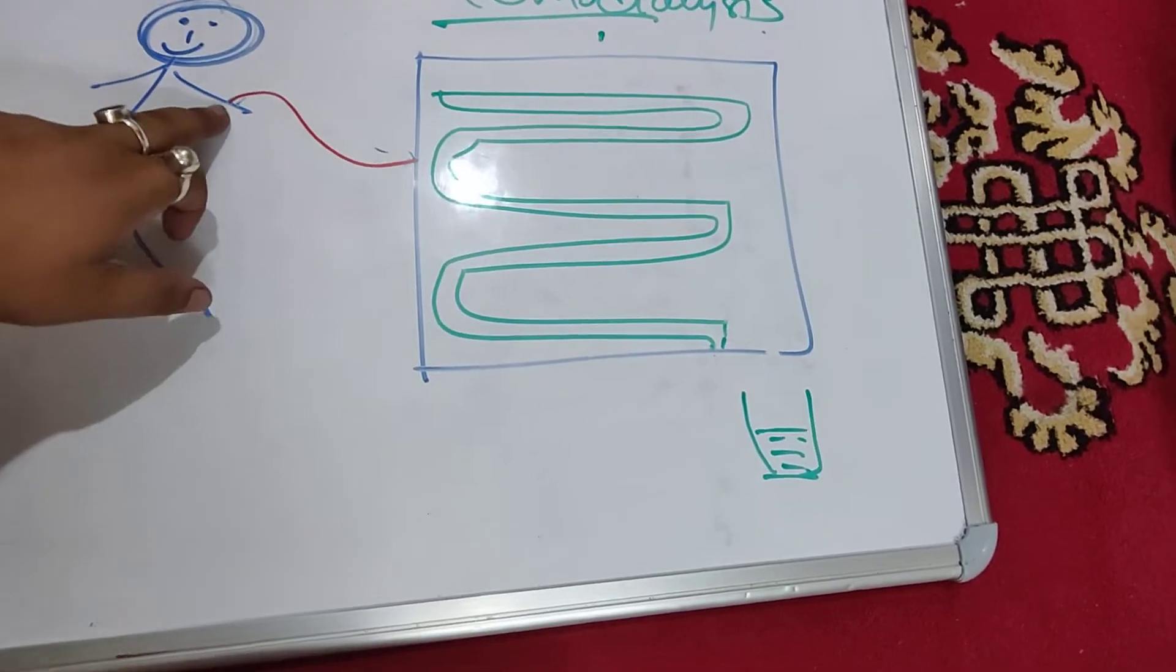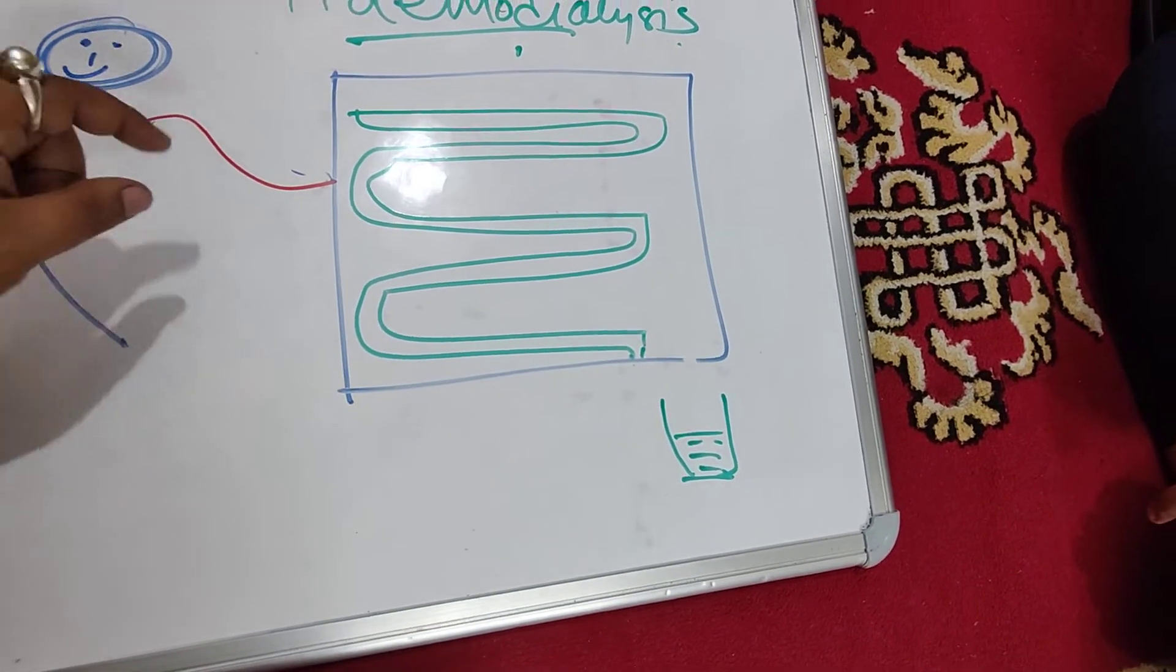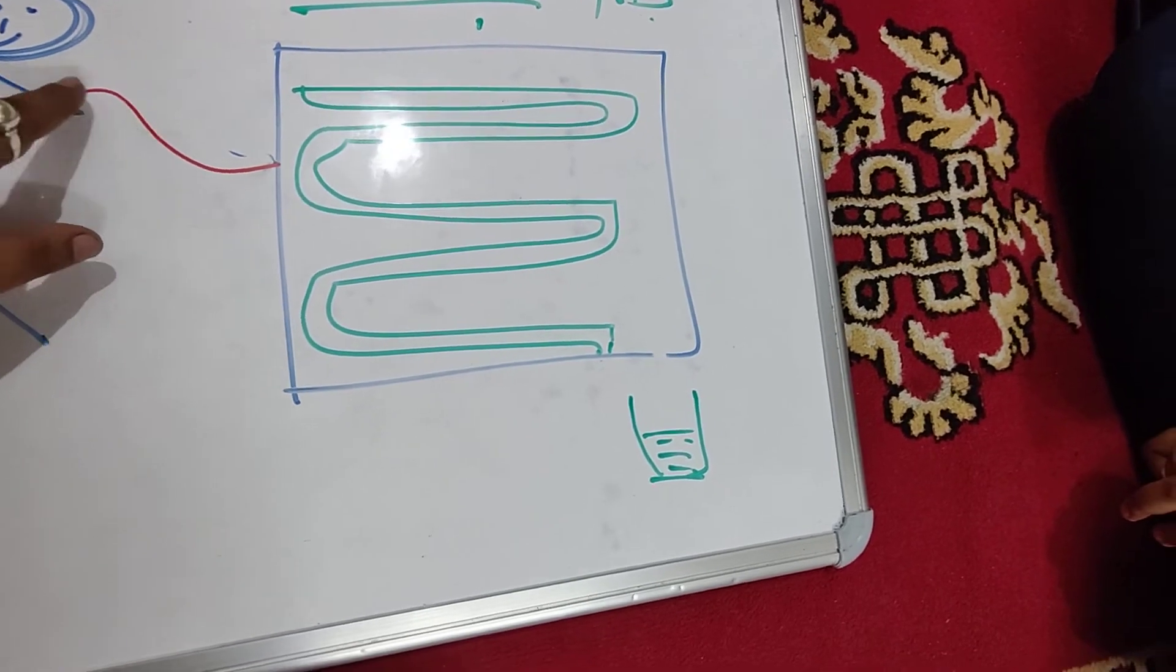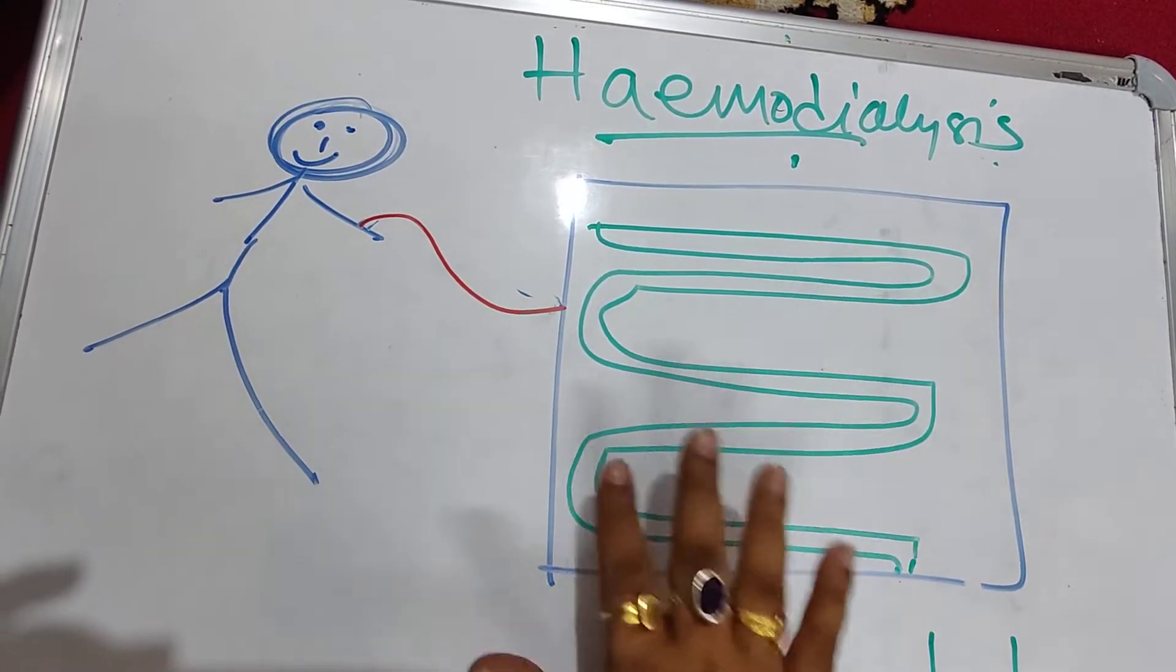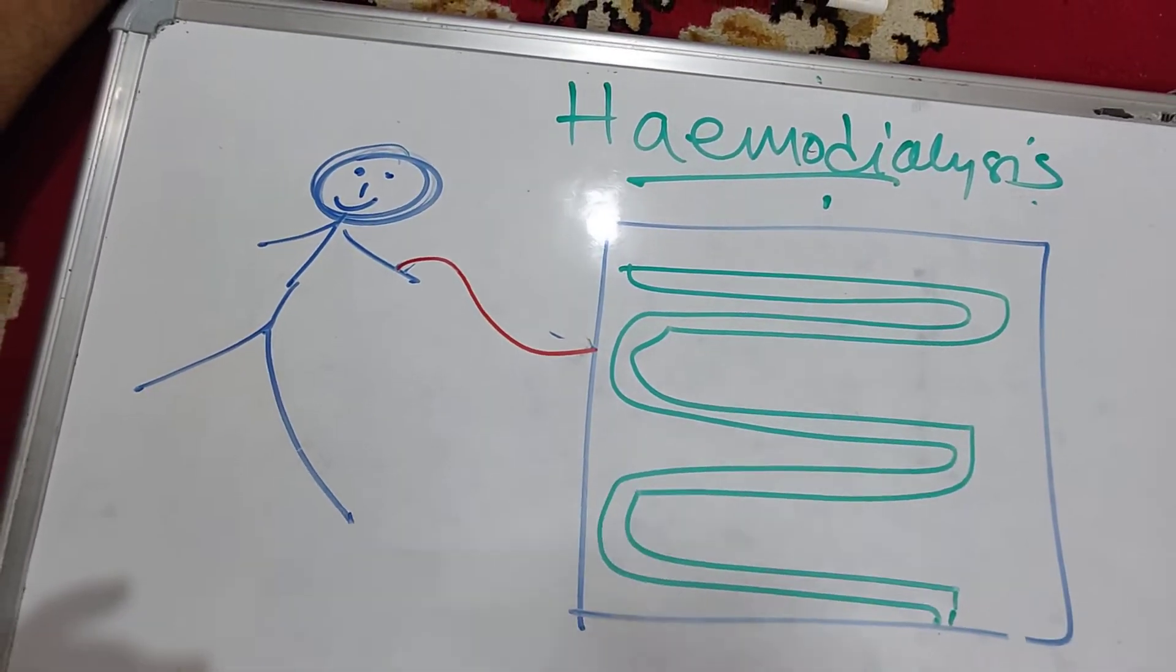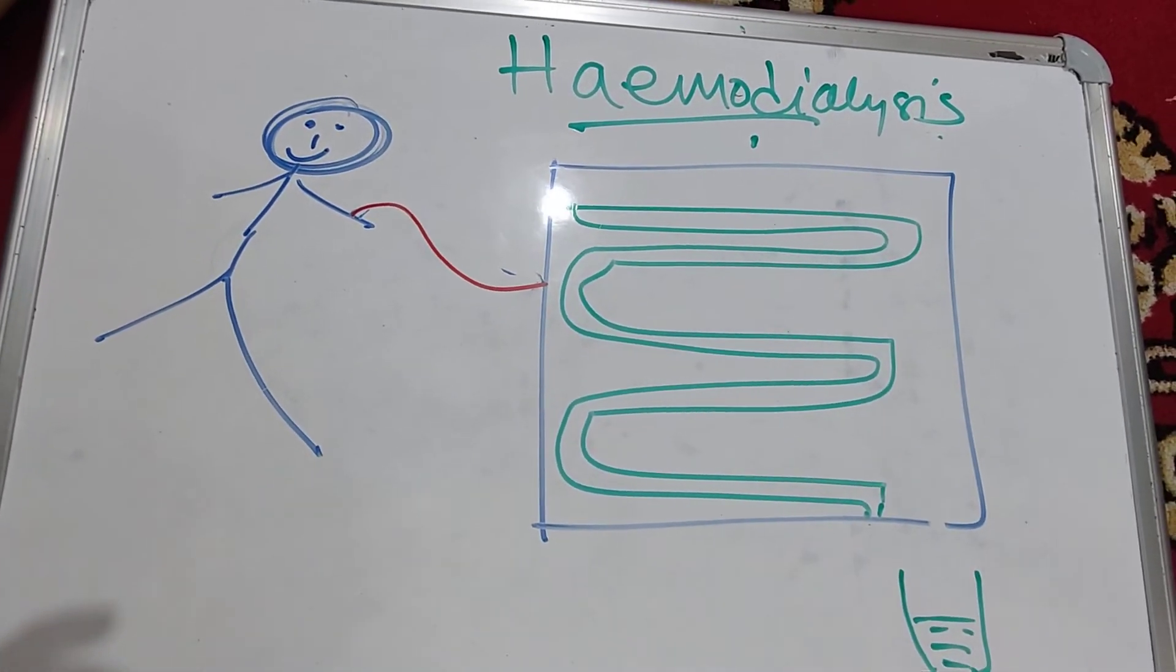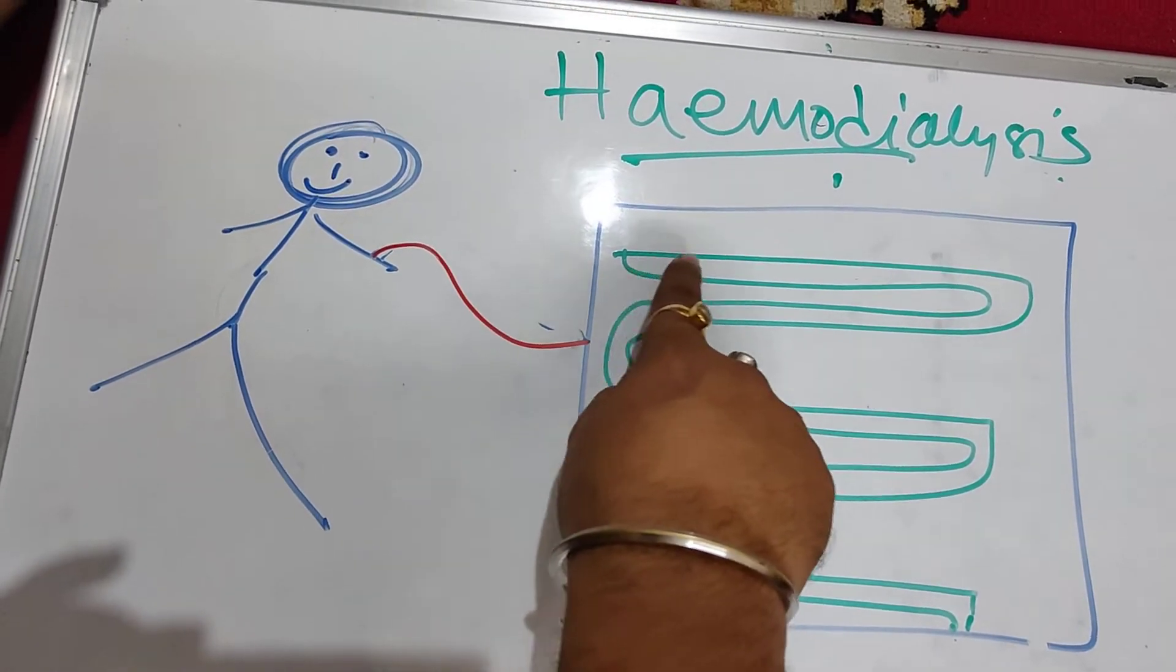They connect a tube to the artery with a needle, and from the tube, blood comes out and enters the chamber where there is a solution at low concentration. Blood enters through these chambers.